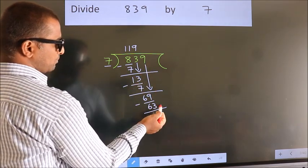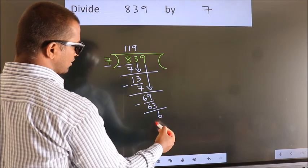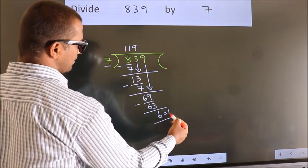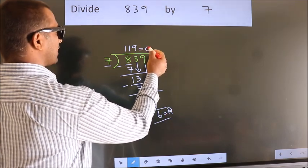No more numbers to bring it down. So we stop here. This is our remainder. This is our quotient.